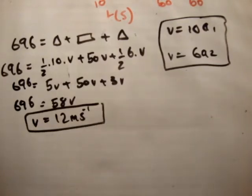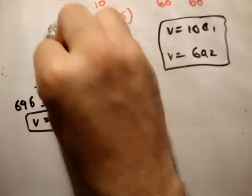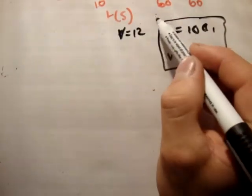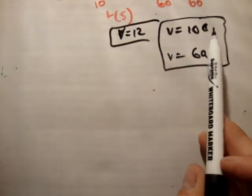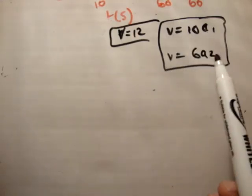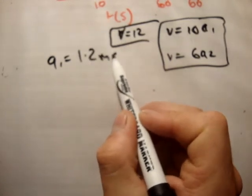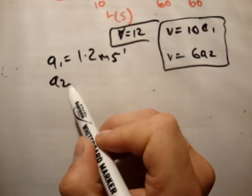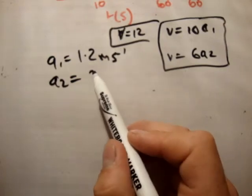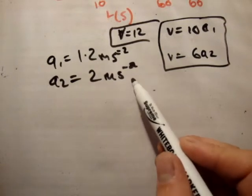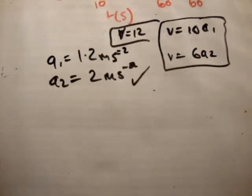And because we have V, we're able to get our accelerations. So in order to V is equal to 12. Therefore, A is equal to 12 divided by 10. A1 is equal to 12 over 10, 1.2 meters per second squared. And A2 is equal to 12 divided by 6, which is 2 meters per second squared. Both of those are correct. So that was reasonably straightforward. And that's part A complete.